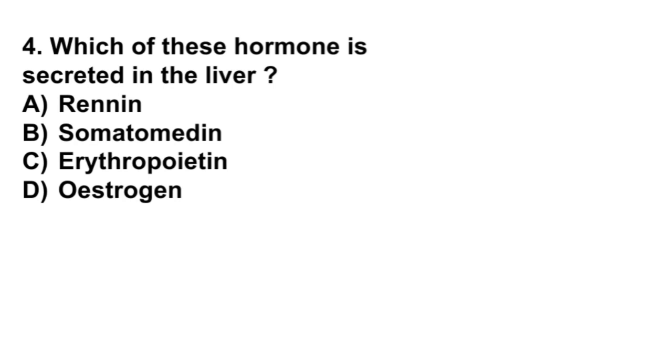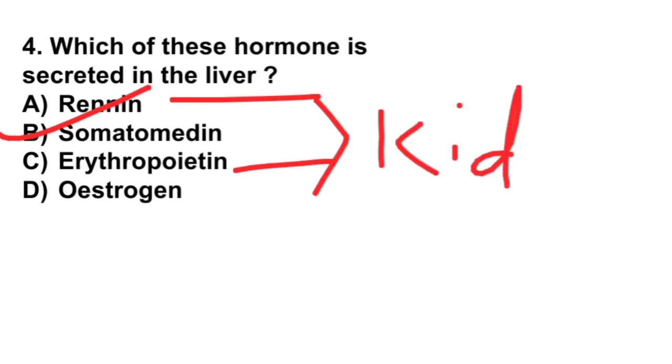Now next, which of these hormones is secreted in the liver? Renin, somatomedin, erythropoietin, or estrogen? Its correct answer is option B, somatomedin. Renin and erythropoietin are secreted by kidney, somatomedin is secreted by liver, and estrogen is secreted by ovary.